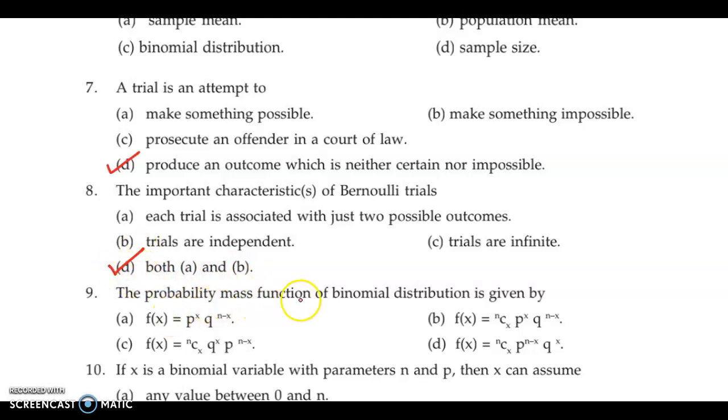Next, the probability mass function of binomial distribution is. Now we know that it is ncx into p raised to x into q raised to n minus x. p is probability of success in each trial and q is probability of failure in each trial. So the correct answer is option B.